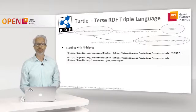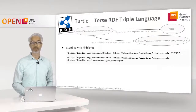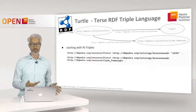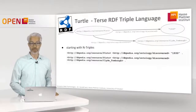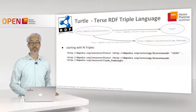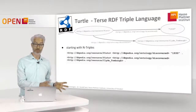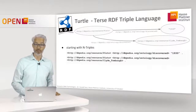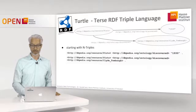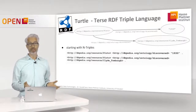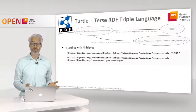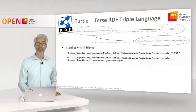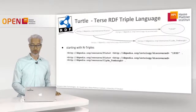Let's look at the following example. I show you the example as a graph representation, and you also see our starting point, which is the so-called n-triples representation. As a graph, we see the nodes represent the resources, which are either a URI or can be a literal. In n-triples notation, the URI always is embraced by so-called angle brackets, and literals usually are written in quotation marks.